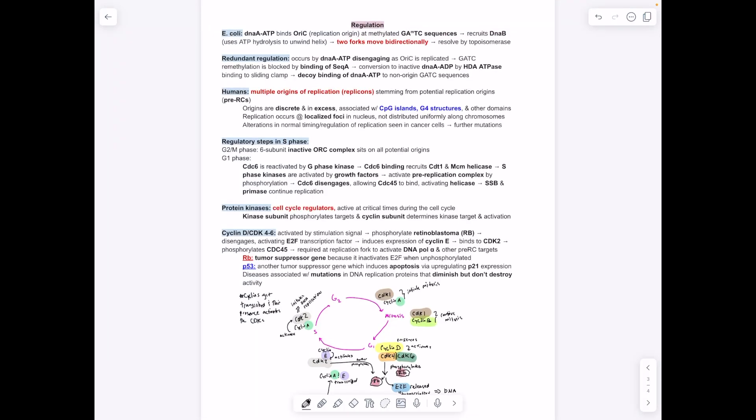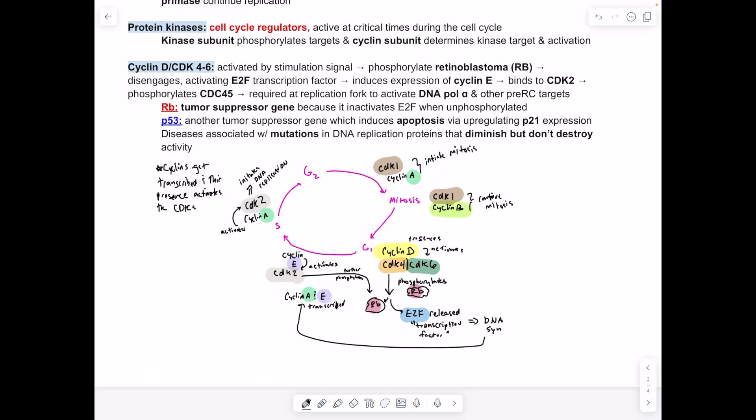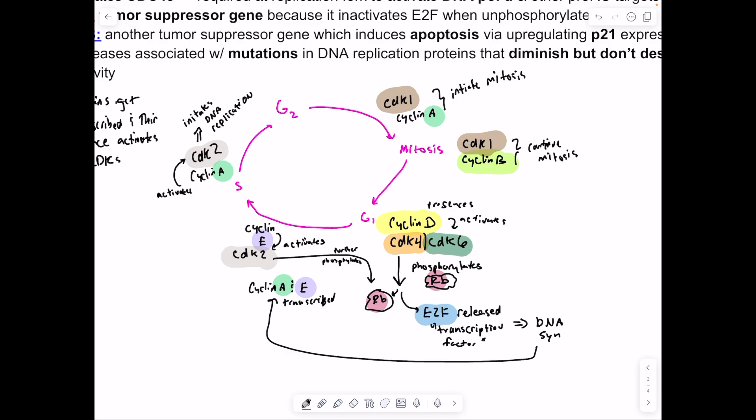In terms of regulation, the important thing here that we're probably going to be tested on is the cyclins and the CDKs. Basically, you have cyclins, or proteins that get transcribed, and their presence in the cell activates cyclin-dependent kinases, which go through and phosphorylate things to control DNA replication or transcription. They act as different checkpoints. This is a diagram we had from the first exam. There's different checkpoints throughout the cell. Starting with G1, we have cyclin D. The presence of cyclin D activates CDK4 and CDK6, which phosphorylates RB, which causes it to release elongation factor 2, which goes into the DNA to the promoter and causes cyclin A.